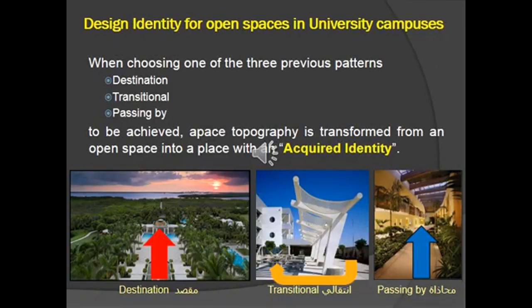We studied the movement of the community and the users within the university campuses, and summarized it into three main circulations or three main directions. One of them is the destination, the other is the transitional, and the final one is the passing by. We put these three main circulations into consideration to show how the identity should be expressed within the project itself.